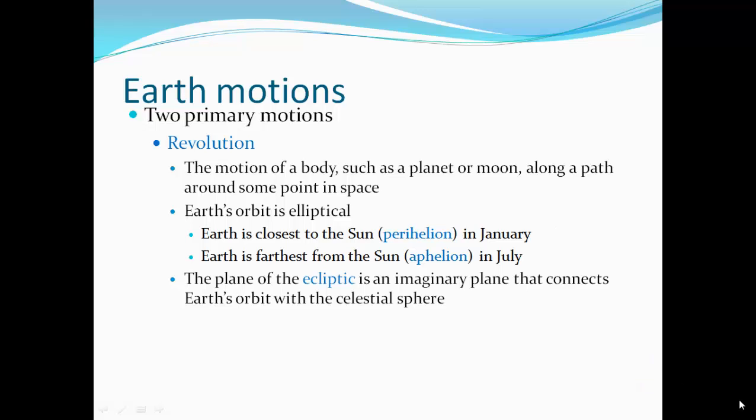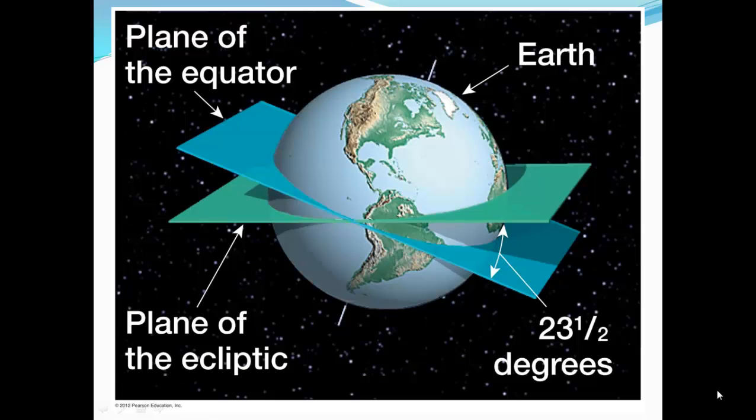Revolution. That's the motion of a body, which is a planet or a moon, along a path around some point in space. So our orbit, our Earth's orbit is elliptical. Earth is the closest to the sun in January. That's when Earth is at perihelion. Earth is farthest from the sun, aphelion, in July. The plane of the ecliptic is an imaginary plane that connects Earth's orbit with the celestial sphere. It's like putting a piece of paper through Earth's orbit and out to the celestial sphere. So here, the Earth is tilted. So here's a piece of paper through the Earth. The Earth's equator would be here. But that tilt of the Earth makes it so when you pass paper through the plane of the ecliptic, it's going to be offset by 23 and a half degrees. And that's the number of degrees of tilt on Earth's axis.